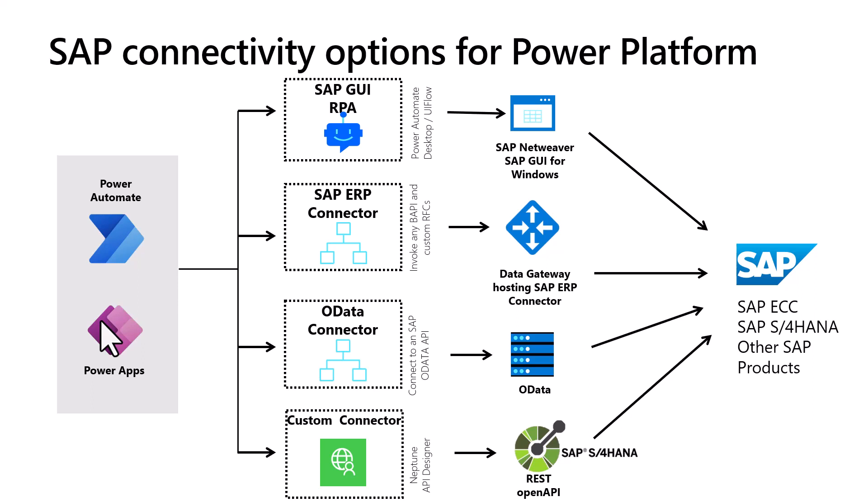In many cases, the SAP department creates actions using the ERP connector that provide information such as account data, product/material information, purchase orders, and business partner data in a controlled and restricted way. The Power Platform user then simply consumes this information and makes it available in their specific flows.